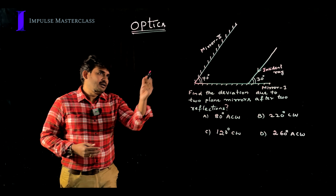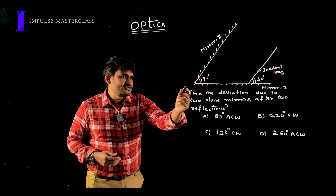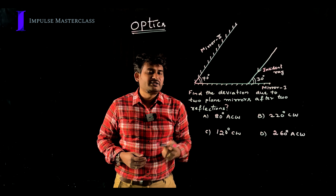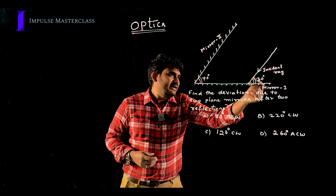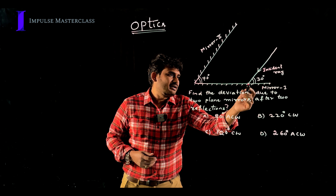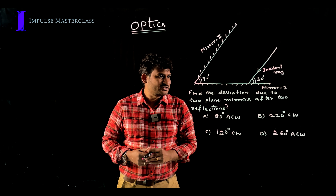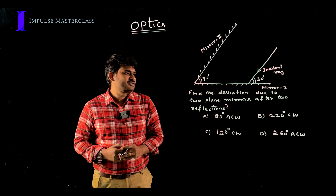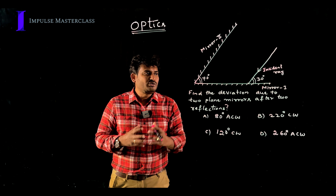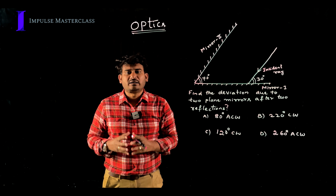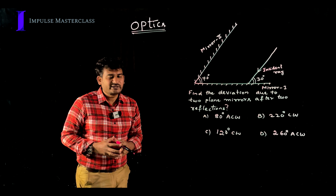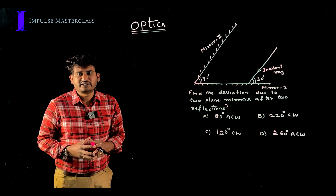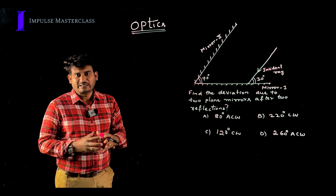Now let's have a look at this question. I have two mirrors here — mirror 1 and mirror 2. The angle between these two plane mirrors is 70 degrees and a light ray is falling on mirror 1 at an angle of 30 degrees. The question is: find the deviation due to two plane mirrors after two reflections. Option A: 80 degrees anti-clockwise. Option B: 220 degrees clockwise. Option C: 120 degrees clockwise. Option D: 260 degrees anti-clockwise.